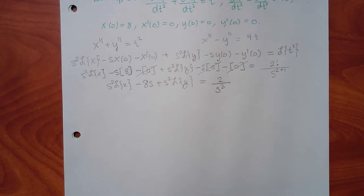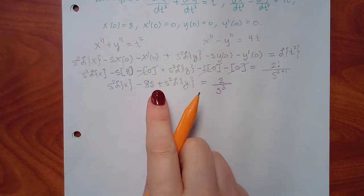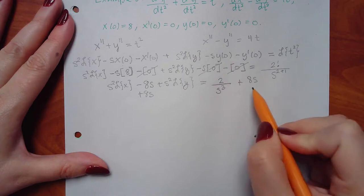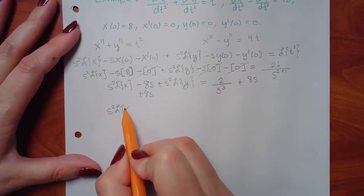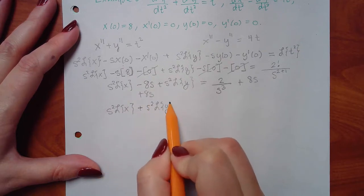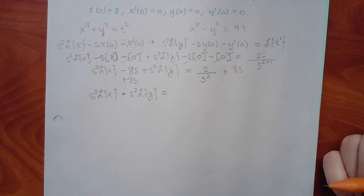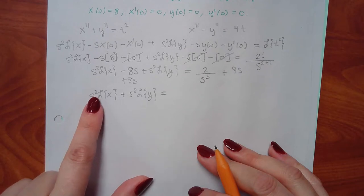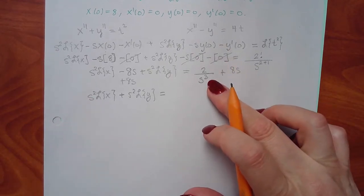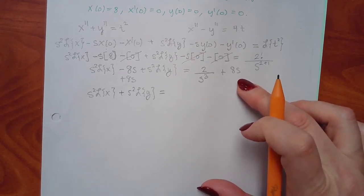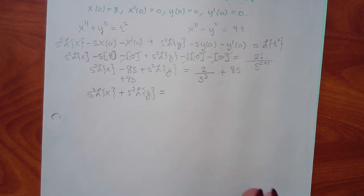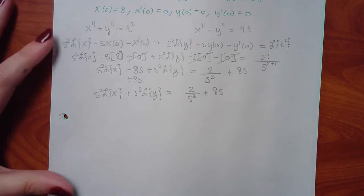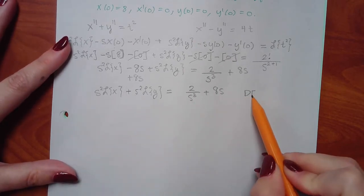We need L{x} and L{y} on the left and everything else on the right. So the 8s moves over — add 8s to both sides — giving s squared·L{x} plus s squared·L{y} equals 2 over s cubed plus 8s. I'll leave those as separate fractions for now. This is DE1.